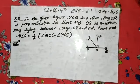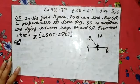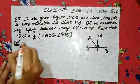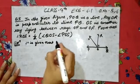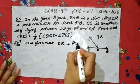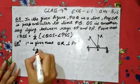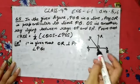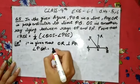Now see what is given to us first — you must always use whatever is given; from that you will definitely get some result. It is given that OR is perpendicular to line PQ, and if OR is perpendicular, then angle POR is 90 degrees.